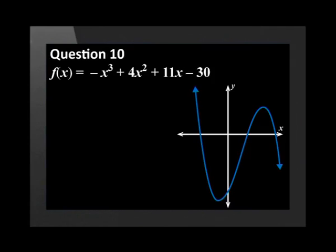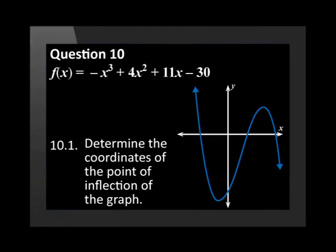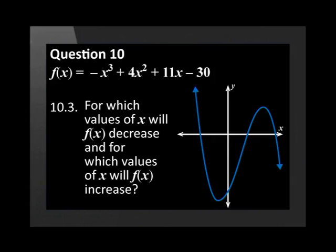The graph shows the curve of f of x equals minus x cubed plus 4x squared plus 11x minus 30. Determine the coordinates of the point of inflection of the graph. Determine the coordinates of the turning points of the graph. For which values of x will f of x decrease and for which values of x will f of x increase?